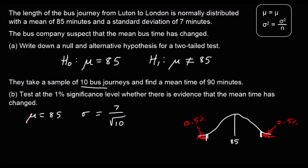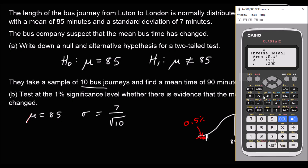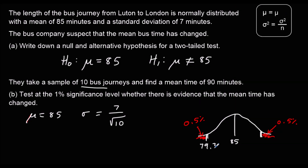Let's work out these two critical values. On the calculator, menu 7, inverse normal. We're going to have an area of half a percent for the first one — 0.005 — a standard deviation of 7 over root 10, and a mean of 85. That gives us 79.3.